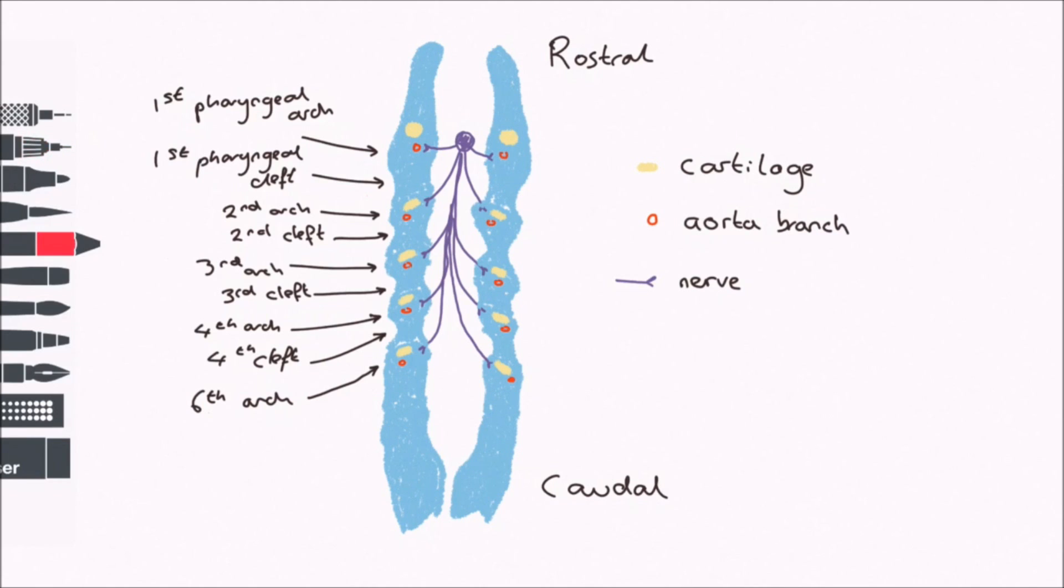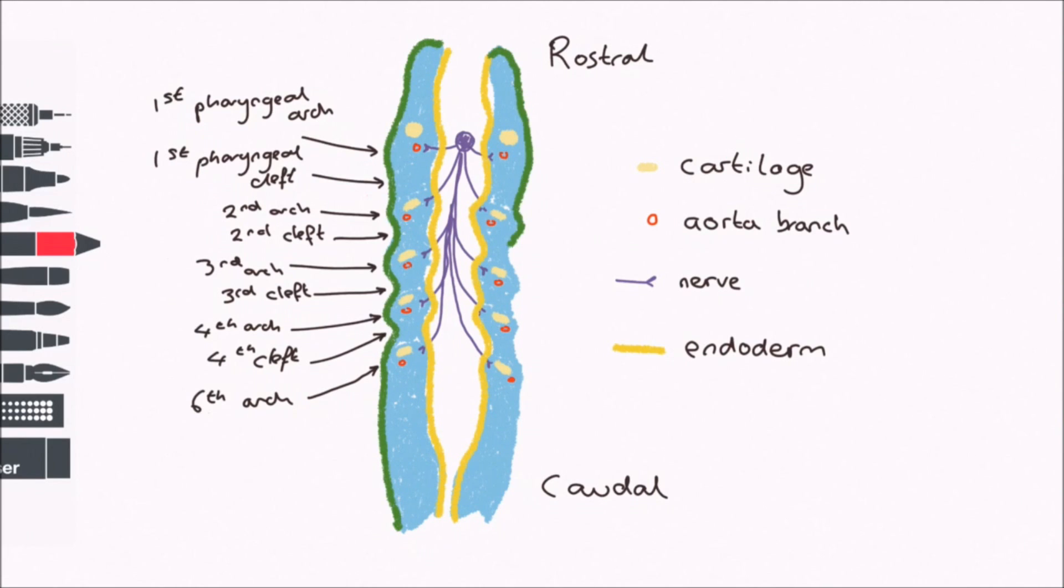A layer of ectoderm coats the outside, and a layer of endoderm coats the inside. Mesoderm is between. Each pharyngeal arch is again associated with a cartilage, an aortic arch, and a cranial nerve.